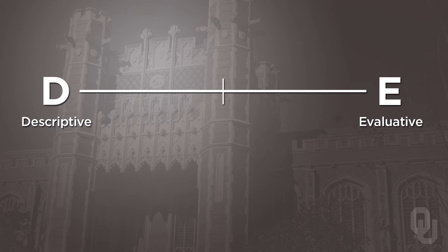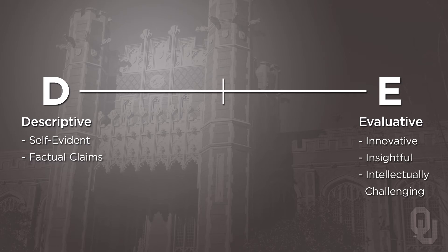All claims in expository writing may be positioned at some point on a linear scale. The more self-evident the claim, the closer it is to the D end of the scale, with factual claims the most descriptive of all. The more innovative, insightful, or intellectually challenging the claim, the closer it is to the E end of the scale. An academic argument relies on a central claim — a thesis — that is more E than D, located somewhere on the right side of the scale. You might think of this continuum as a kind of slide scale with which to measure your thesis: Is your thesis evaluative enough, or is it too descriptive? Too obvious and not arguable enough — too D — or perhaps too excessive as an evaluative claim — too E — and thus in need of qualification to pull it back toward the middle. The skill lies in knowing when your thesis is edgy enough to be a thesis, and that depends on what you consider to be an insightful reading of your material.